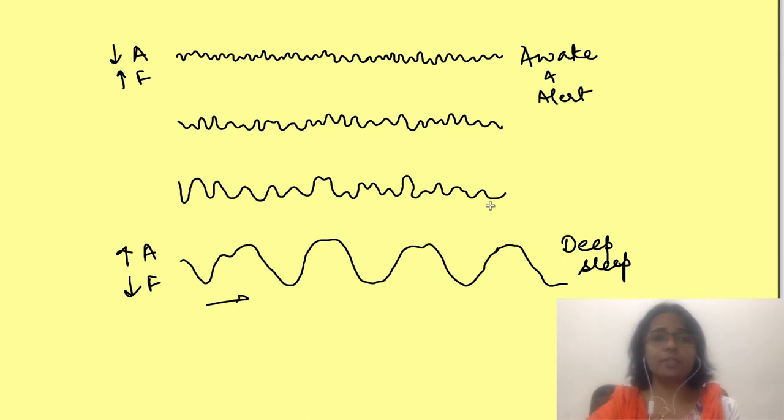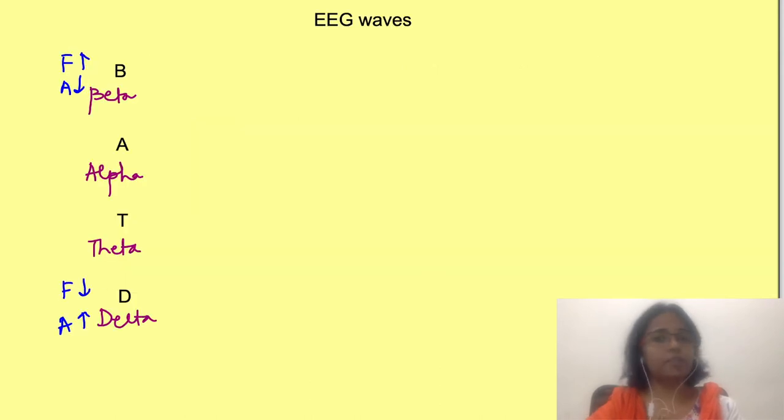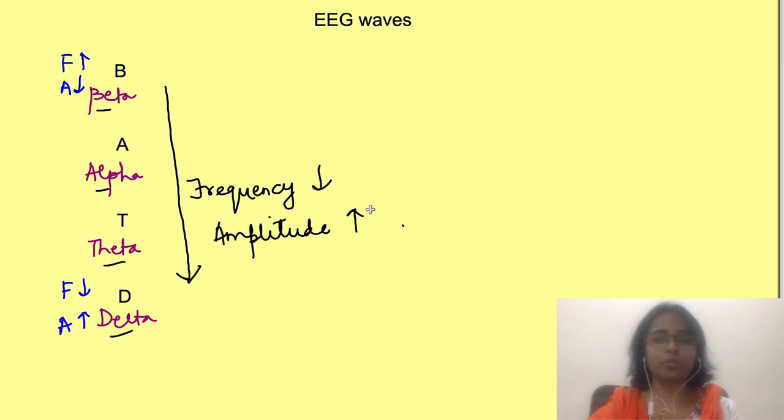With these concepts, let's discuss the EEG waves seen in different brain arousal states. Remember it like this: BAT D. B for beta, A for alpha, T for theta and D for delta. From beta to delta, the sequence is arranged with decreasing frequency and increasing amplitude. Beta waves have highest frequency and lowest amplitude, while delta waves have lowest frequency and highest amplitude.